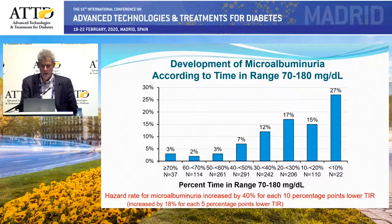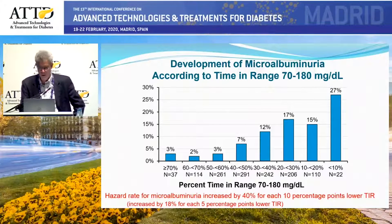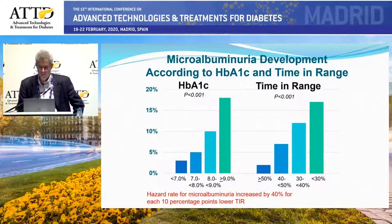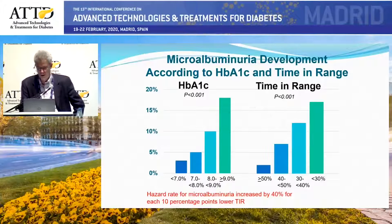When we looked at microalbuminuria, we see a very similar effect, not quite as strong. The rate for development of microalbuminuria increased by 40% for each 10 percentage points lower time in range. When we compare it with hemoglobin A1C, it's a very similar pattern — higher A1C or lower time in range associated with substantially greater progression of renal disease.